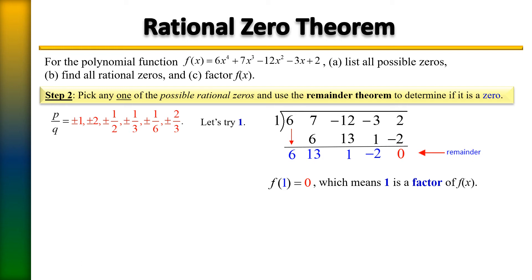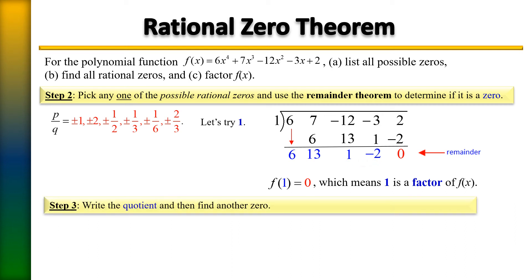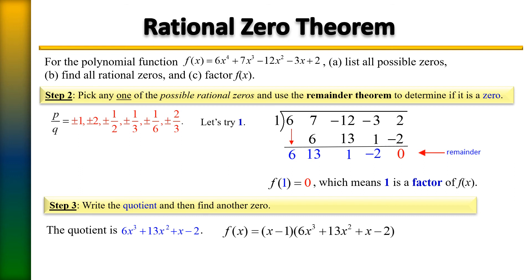Since 1 is a zero, the divisor is x minus 1. Write the quotient one degree less than the original — the highest degree was 4, so it becomes degree 3. The quotient is 6x cubed plus 13x squared plus x minus 2, multiplied by the divisor x minus 1.